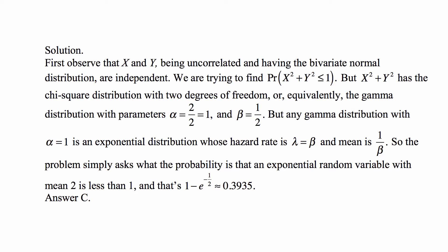And that's the same as 1 minus e to the minus lambda times the value of x. Lambda, in this case, is equal to beta, so 1/2 — lambda is the hazard rate, the reciprocal of the mean for this exponential distribution. So the cumulative distribution function is what we're really evaluating at x equal to 1, with the hazard rate of 1/2. That's 1 minus e to the minus lambda x. So lambda is 1/2, x is 1, giving 1 minus e to the negative 1/2, and that's approximately 0.3935 — answer C.